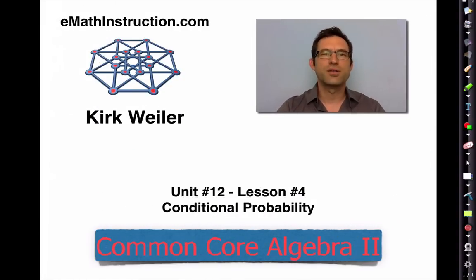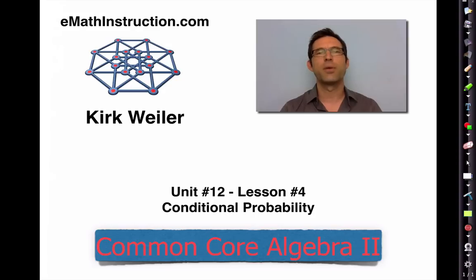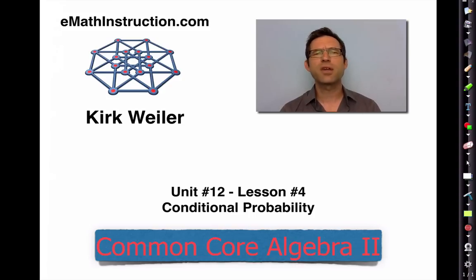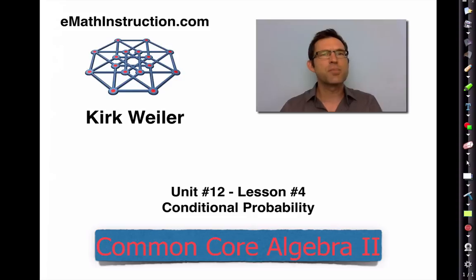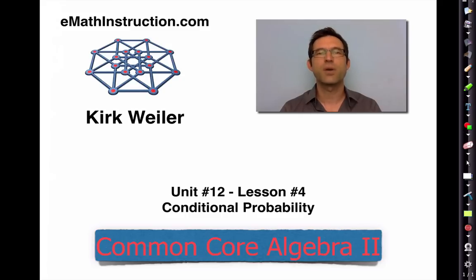Today we learned about conditional probability — a really neat topic that leads to a lot of other things in probability. It's the idea that you calculate the probability of an event based on having some additional information, like: what's the probability it's going to rain given that it's 45 degrees outside? There were some very important formulas introduced today that you should commit to memory. Work on that in the homework. Thank you for joining me for another Common Core Algebra 2 lesson by EMath Instruction. My name is Kirk Weiler — until next time, keep thinking and keep solving problems.